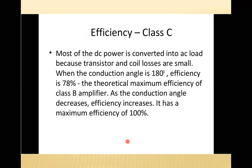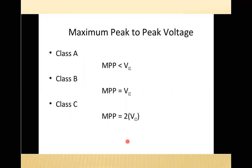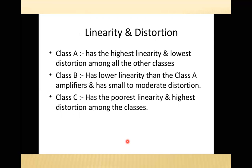Regarding maximum peak-to-peak voltage: Class A maximum peak-to-peak voltage is less than VCC; Class B maximum peak-to-peak voltage is equal to VCC; Class C maximum peak-to-peak voltage is equal to 2×VCC. For linearity and distortion: Class A has the highest linearity and lowest distortion. Class B has lower linearity than Class A and has small to moderate distortion. Class C has the poorest linearity and highest distortion.